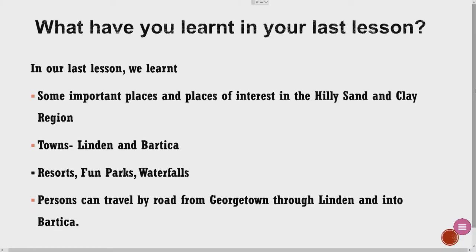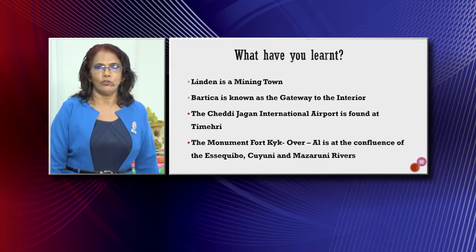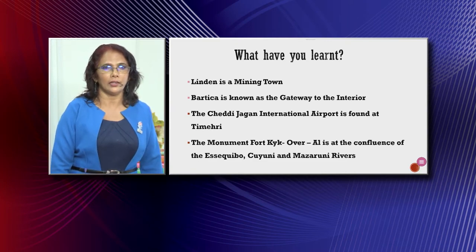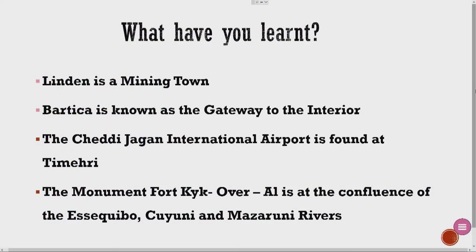Persons can travel by road from Georgetown through Linden and into Bartika. Linden is a mining town. Bartika is known as the gateway to the interior. The Cheddi Jagan International Airport is found at Timiri. The monument for Fort Kaikoverall is at the confluence of the Essequibo, Cuyuni and Mazaruni rivers.